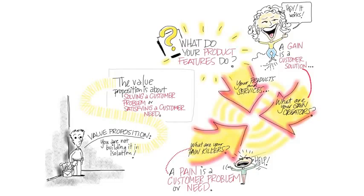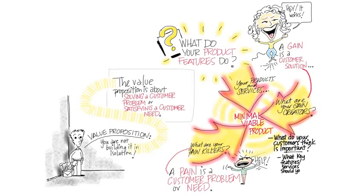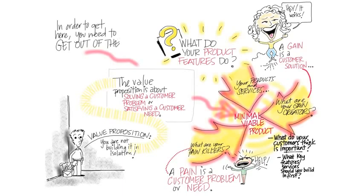The real goal of figuring out the value proposition is understanding what we call the minimum viable product. You're trying to figure out, now that you understand your product and service, what gains you're creating for customers and what pain you're solving — what's the smallest possible feature set you could be shipping on day one that solves these pains and creates gains for them? And this really is an interactive process, because there is no way, sitting in your office, you could figure this out.